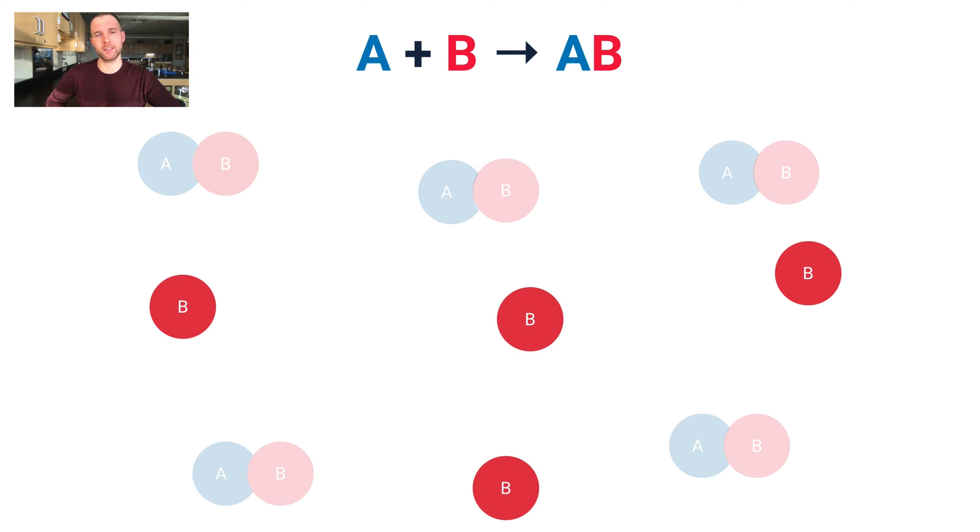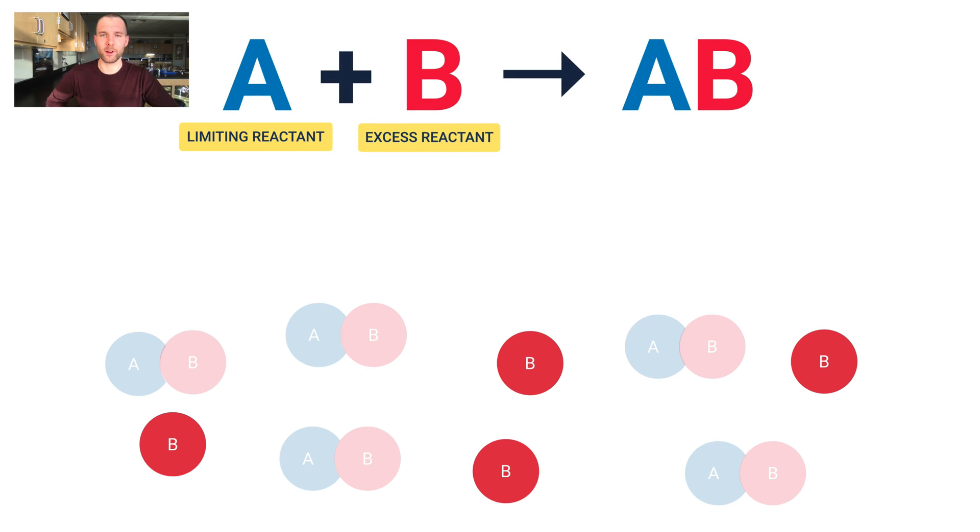I have plenty of B left over. We'd call this our excess reactant, and A would be called the limiting reactant. Reactant A is the limiting reactant because it's used up first and therefore limits how much of the product can be made.